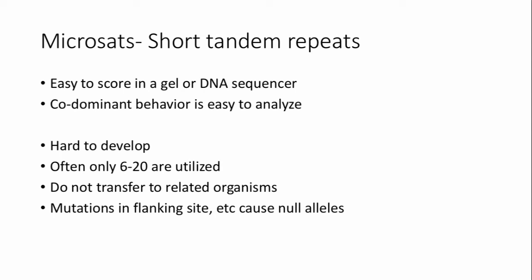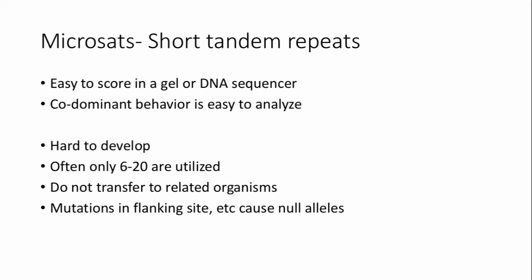And if you develop them in one organism, such as a human, they don't work particularly well in a related organism, like chimpanzees, because mutations in that flanking site or other factors can cause null alleles. And this is simply a bias that microsatellites have in the way that we develop them.